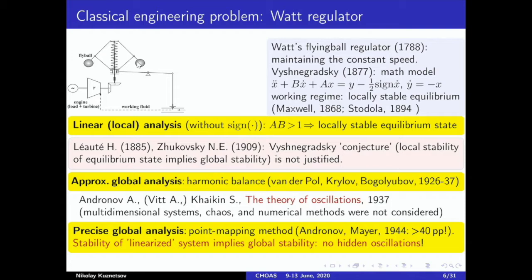However, it soon turned out that such a regulator does not always stabilize the system and dangerous oscillations can occur. Scientists were tasked to identify conditions for stable operation and explain the occurrence of oscillations. One of the first solutions was suggested by Ivan Vyshnygradsky in 1877. At that time, Alexander Lyapunov was a second-year student in St. Petersburg University. Vyshnygradsky derived a non-linear discontinuous dynamical model of the regulator, considered a linearized model without dry friction, and obtained conditions of local stability. Based on engineering reasoning, he conjectured that this condition is sufficient for stable operation.